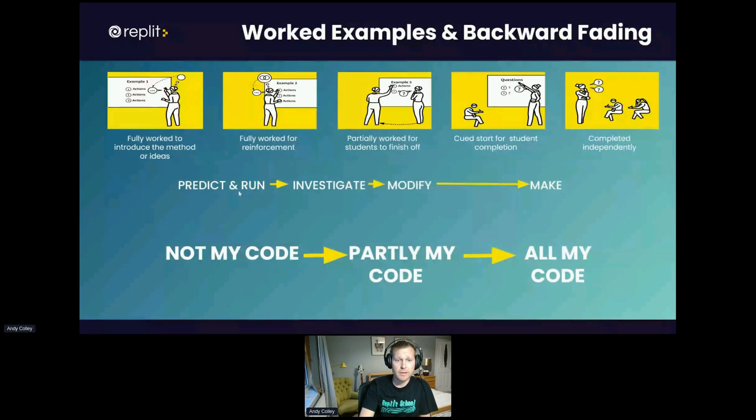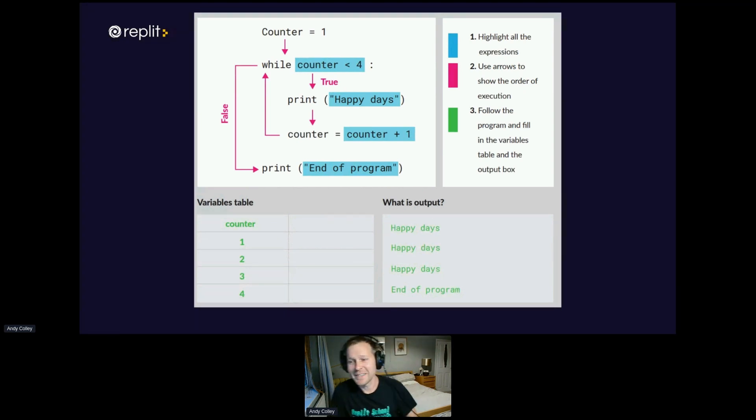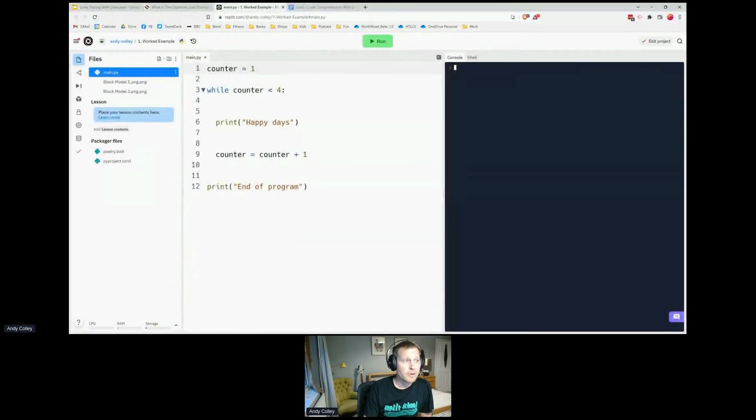Here's an example of a code tracing activity: some simple code and a couple of tasks. Highlight all the expressions, use arrows to show the order of execution, and follow the program and fill in the variables. I'm looking for a student to successfully complete these activities to tell me they've understood how this while loop works. That leads me to how do I do it in Replit.